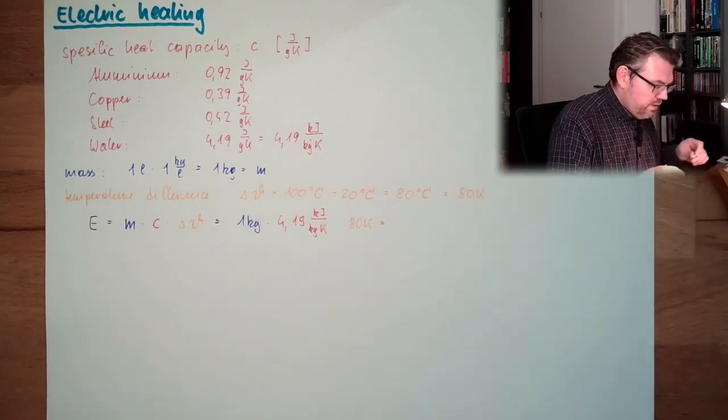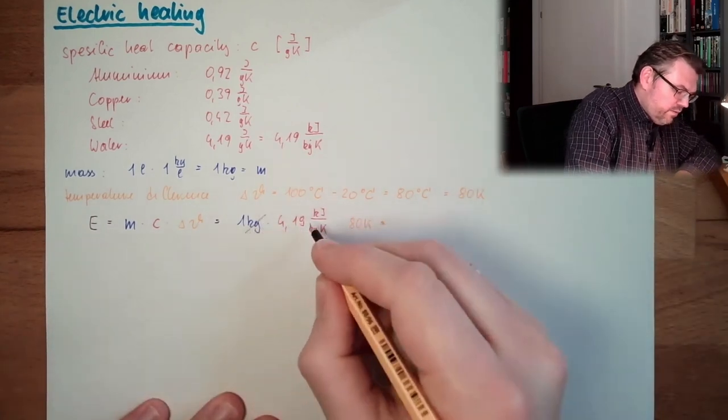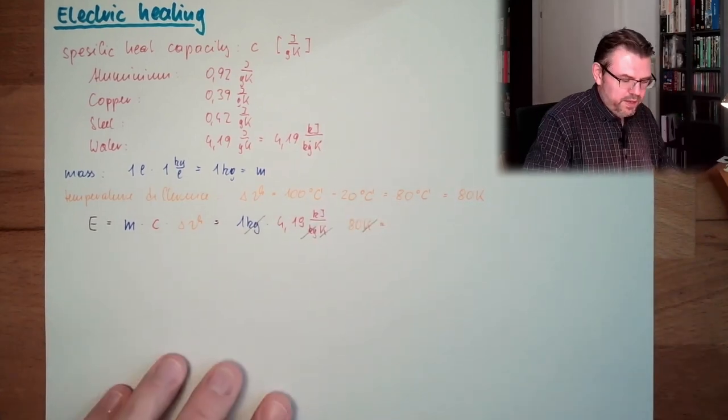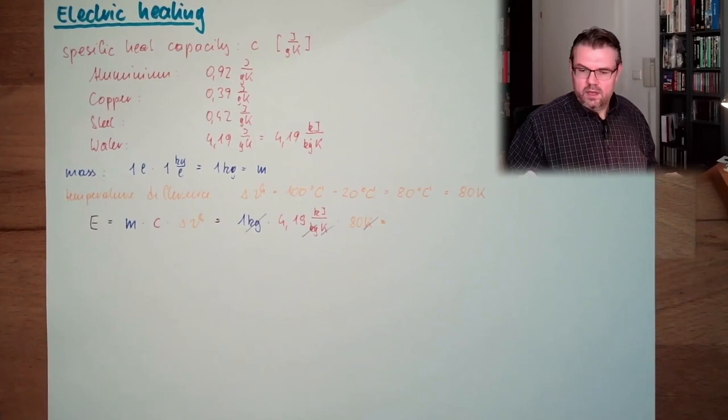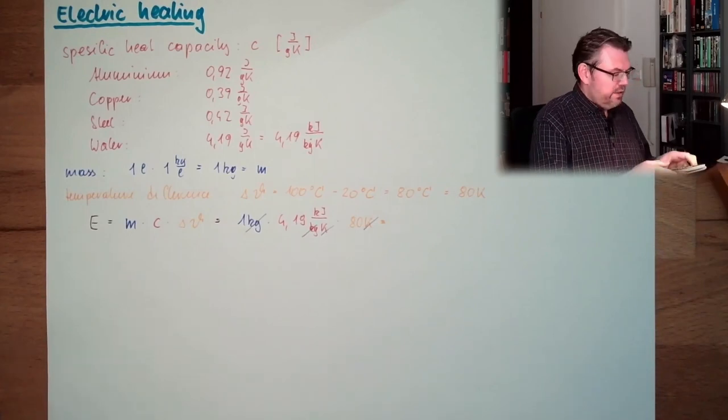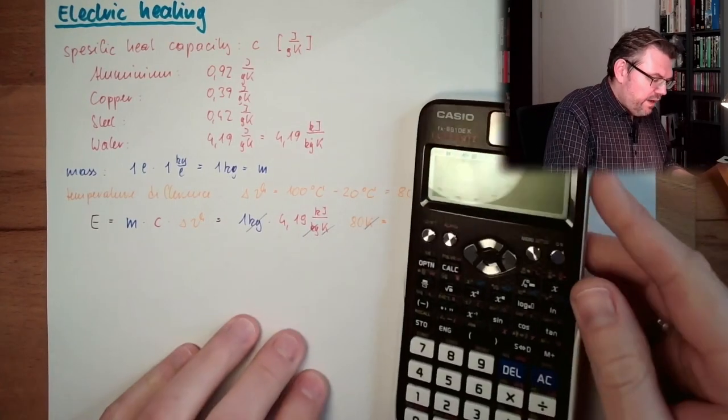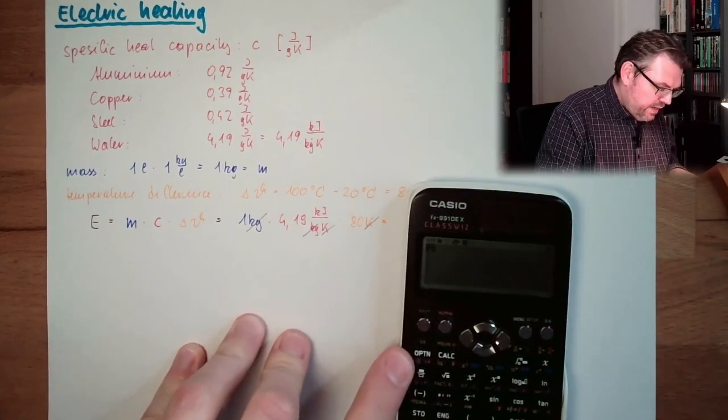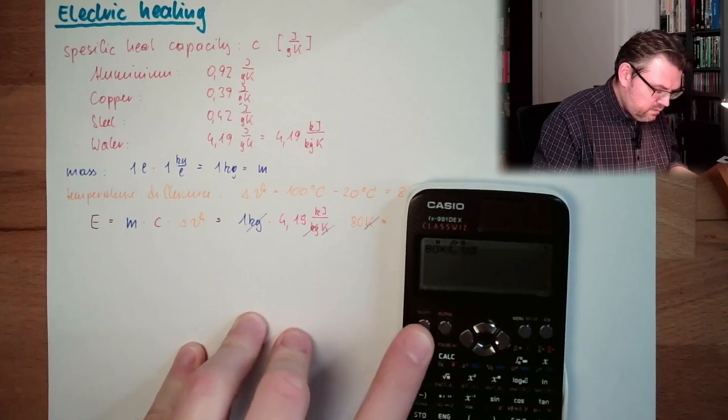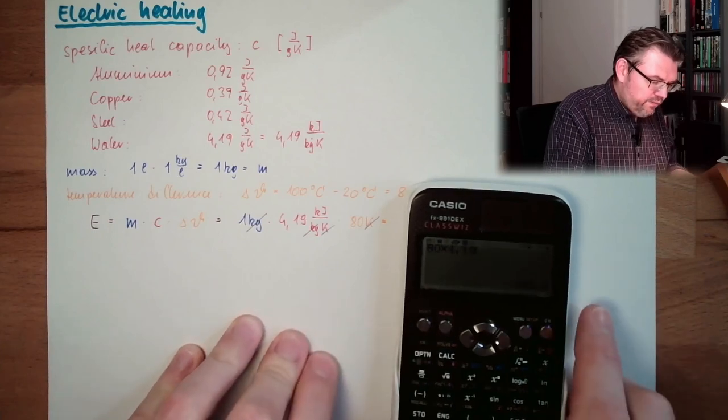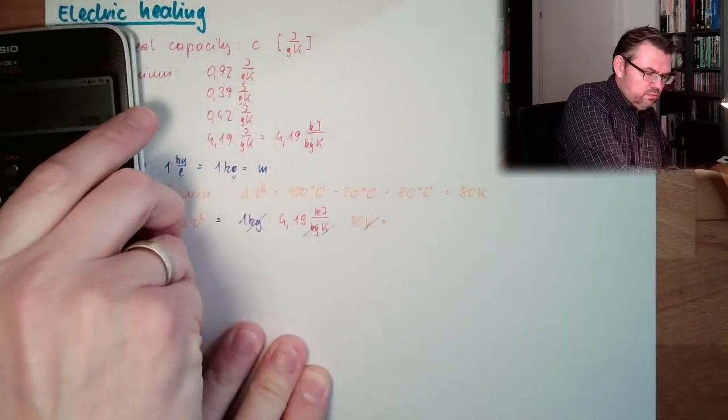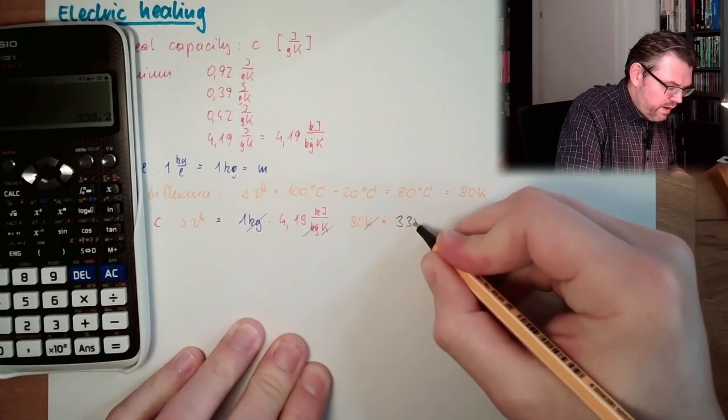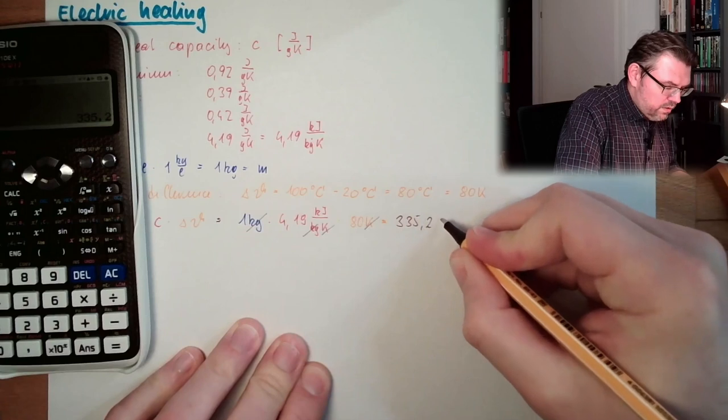Let's see the units. If the kilogram, kilogram, kelvin, kelvin. The rest is kilojoule. So, what we're expecting now is kilojoule. And where is the calculator? Here is the calculator. I have to type this in now. It's 80 times 4.19. And this is 335.2.